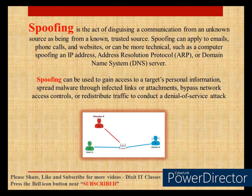Whatever traffic the user sends will reach the hacker. Spoofing can apply to emails, phone calls, and websites. It can also be more technical, such as a computer spoofing an IP address, ARP, or DNS server. If someone has entered your network and spoofed your IP address, all information can be obtained through it. Spoofing can be used to gain access to the target's personal information, spread malware, throw infected links and attachments, bypass network access control, or redistribute traffic to conduct a DOS attack.